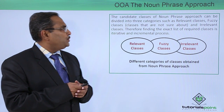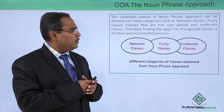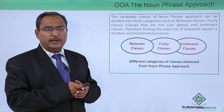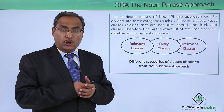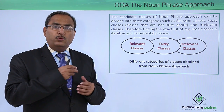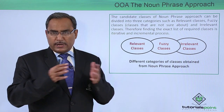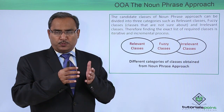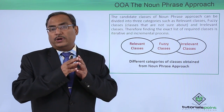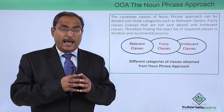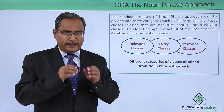The candidate classes of the noun phrase approach can be divided into three categories: relevant classes, fuzzy classes (classes we are not sure about), and irrelevant classes (which can be excluded and deleted from the system). Finding the exact list of required classes is an iterative and incremental process. We revise and retune our problem statement again and again to categorize each class as relevant, fuzzy, or irrelevant, keeping only the relevant classes with properly defined names.